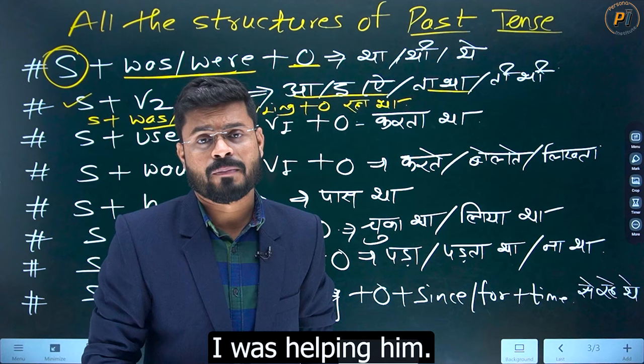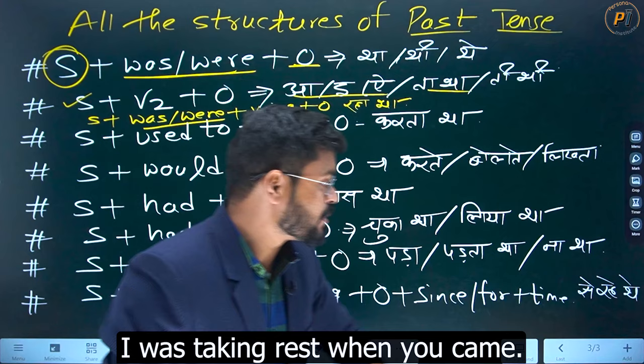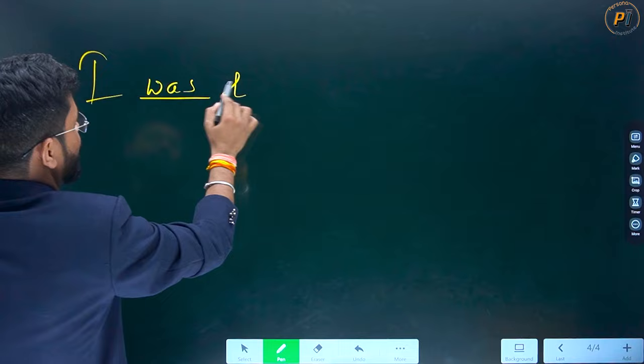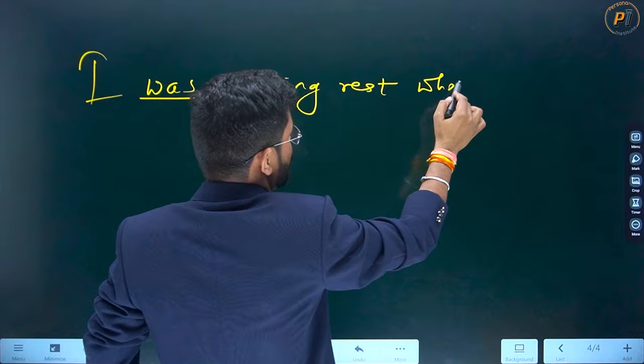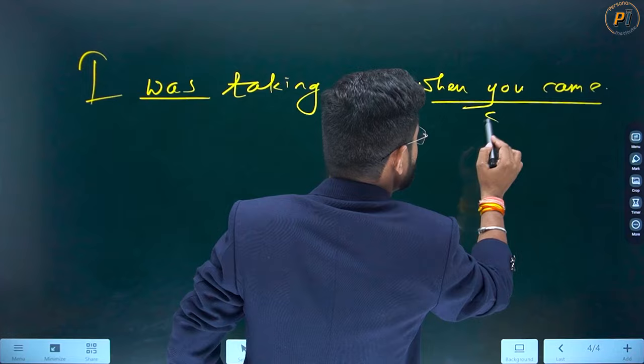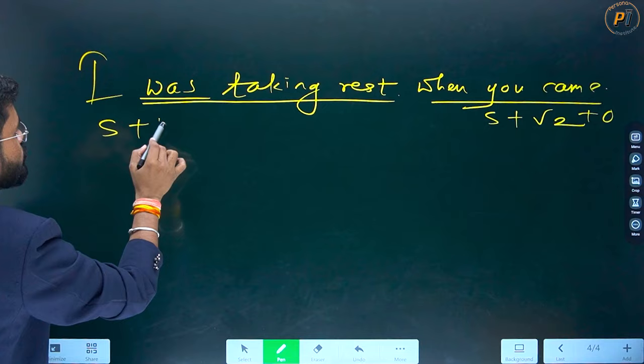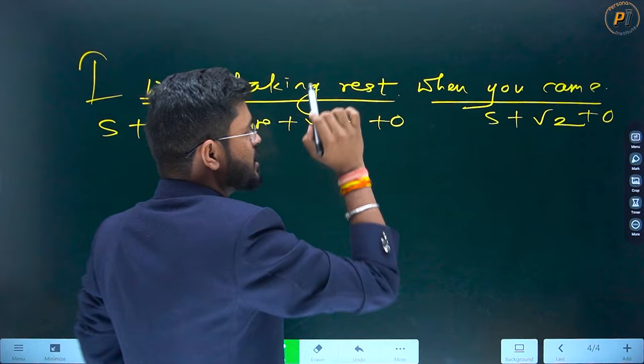I was taking rest when you came. Sabse badhi jo problem hoti hai, woh is tense ki hoti hai — woh sentence nahi bana ta. Aapko sentences zyada zyada banana hai. I was taking rest — when you came. Aap dekh sakte hain: 'when you came' mein subject plus V2 plus object wali situation hai — yeh simple past hai. Lekin 'I was taking rest' — this is from past continuous tense. Past continuous tense mein jaari cheez hoti hai.